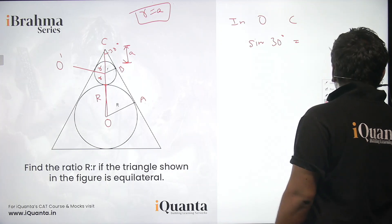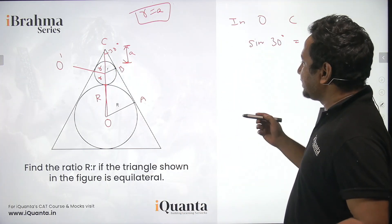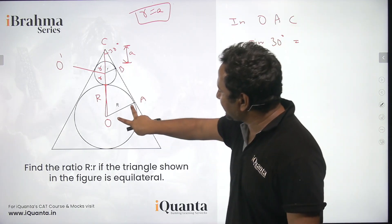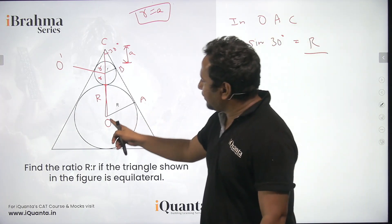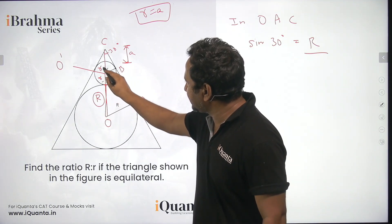Our life becomes really easy because the angle, this angle, is 30 for both the triangles. So now I can say from the triangle, in triangle OAC, sine 30 will be equal to this perpendicular that is capital R whole upon the hypotenuse which is this R, this, and a.